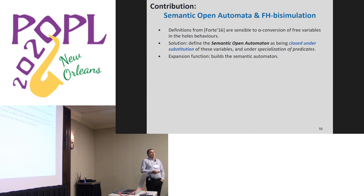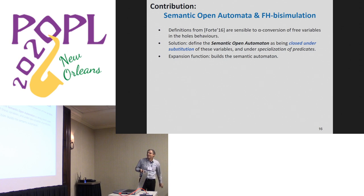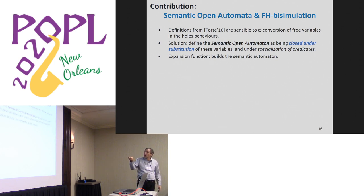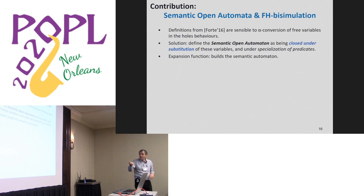Now we have to implement that. When implementing, we run into problems: the bisimulation definition is very sensitive to alpha conversion. If you don't have the same free variables, you have difficulties proving inclusion of predicates. So we define another version of the semantics where open automata are closed under substitution and under specialization of predicates. We also change the definition of the bisimulation itself. We define an expansion function from a finite automaton computed from a PNET that defines the infinite structure that is the real semantics.